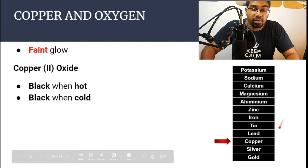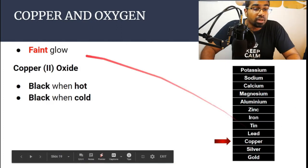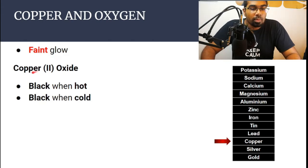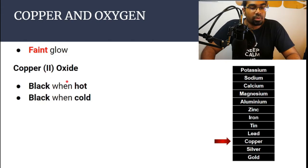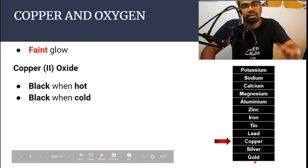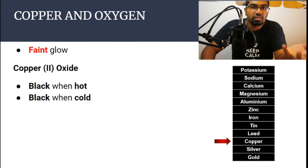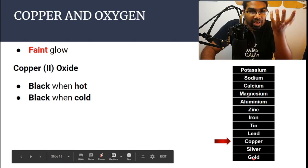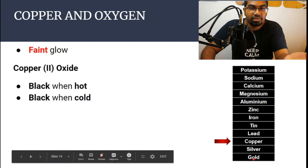Let's go lower still, down to copper. When copper burns in oxygen it produces just a very faint glow. Copper 2 oxide is a characteristic black — black when hot and black when cold. Silver and gold are extremely unreactive. That's why naturally when we find gold and silver, they are not combined with any oxides; they exist naturally as the element itself.